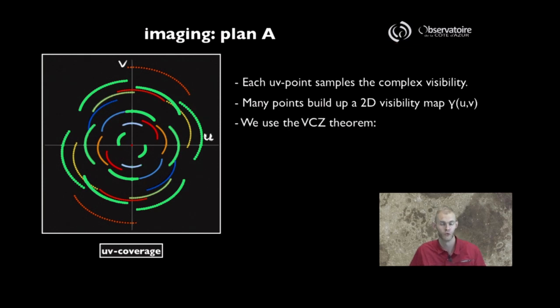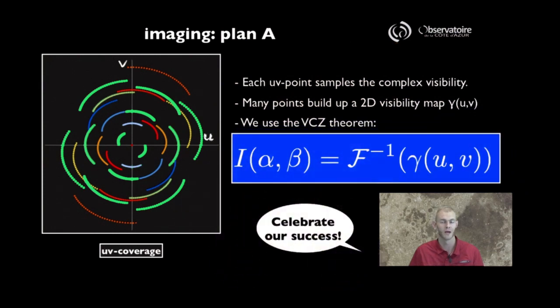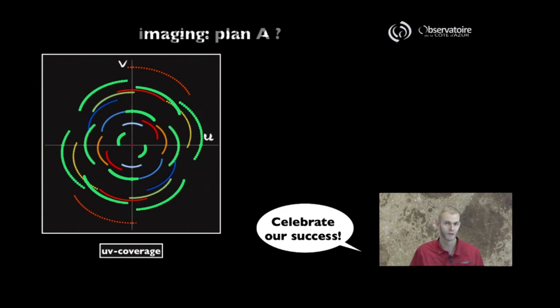We should be able to simply rely on our good old friend the Van Cittert-Zernike theorem to invert this visibility map, gamma, to produce directly the image of the target we were observing. If that sounds like too good to be true, you are right. There are several reasons that make that the reality is unfortunately not as pretty as this ideal plan.